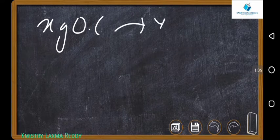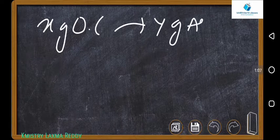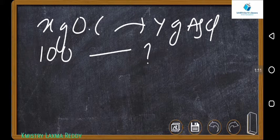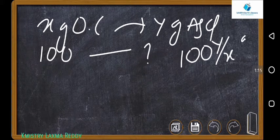So, if X grams of organic compound is there, let's hope Y grams of AgCl is formed, then 100 grams gives how much? That will be 100Y by X grams of AgCl.